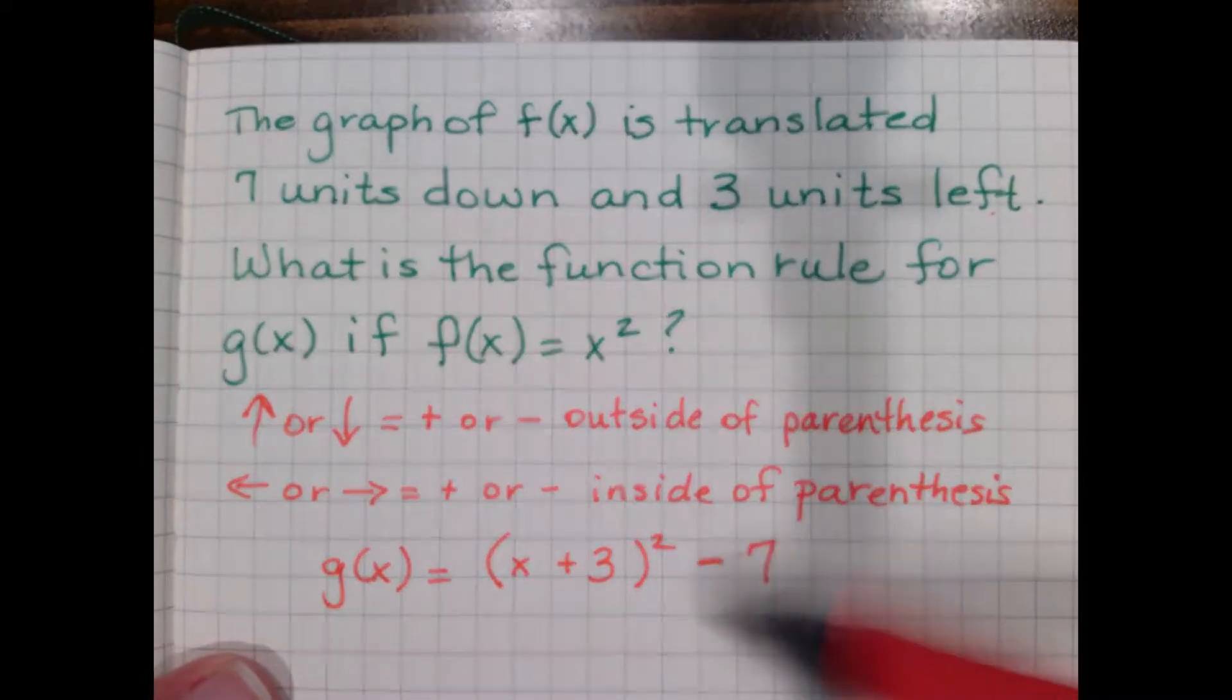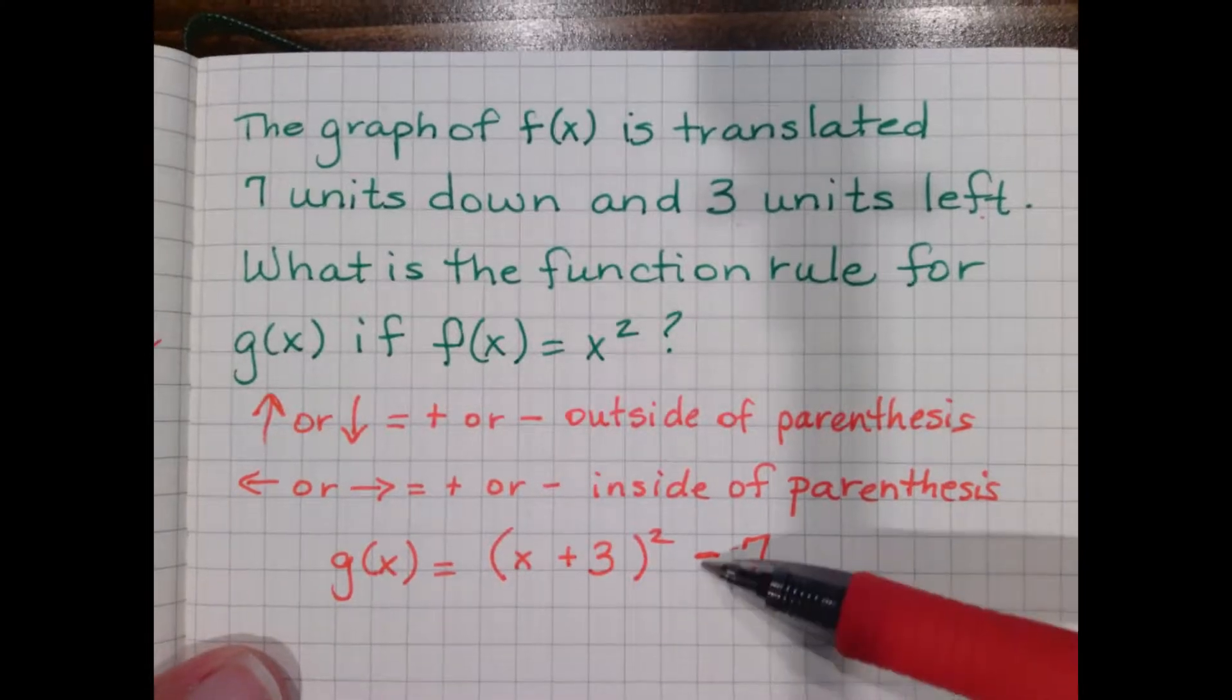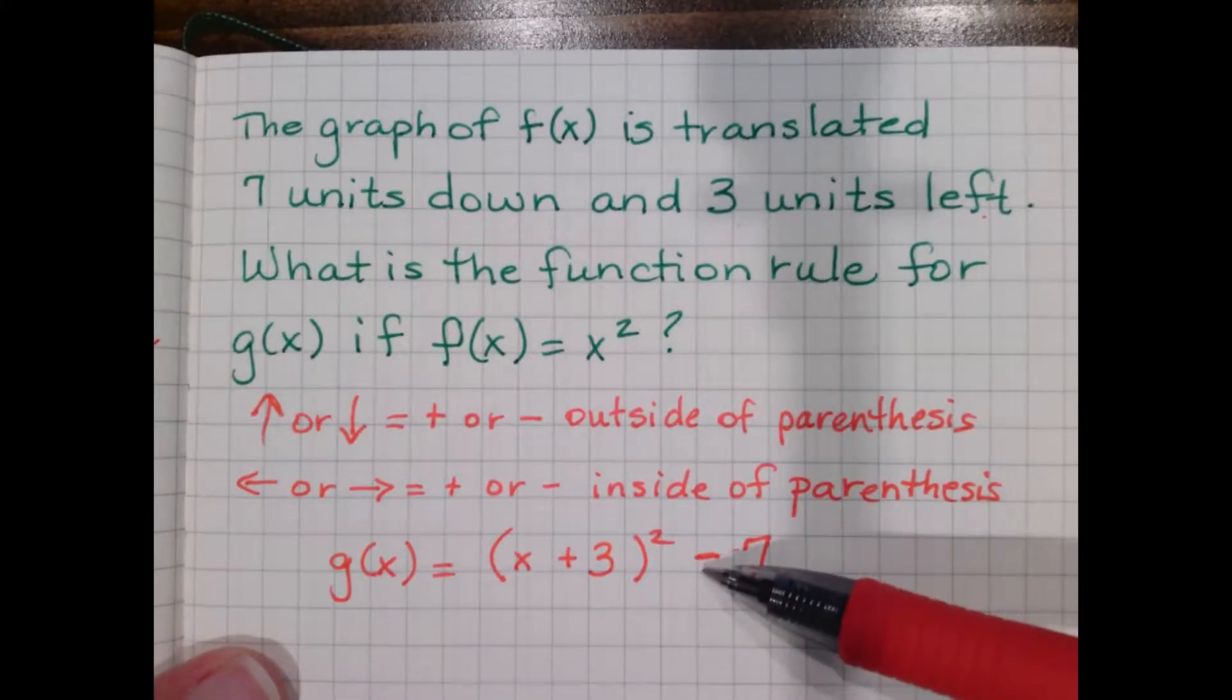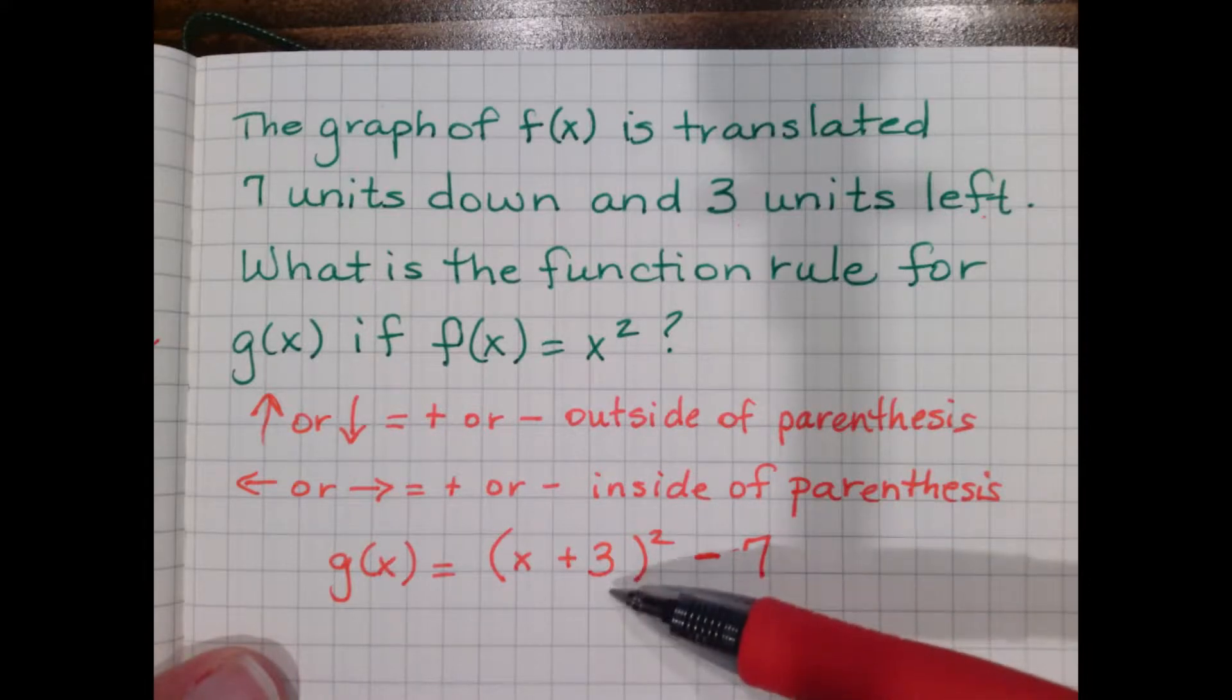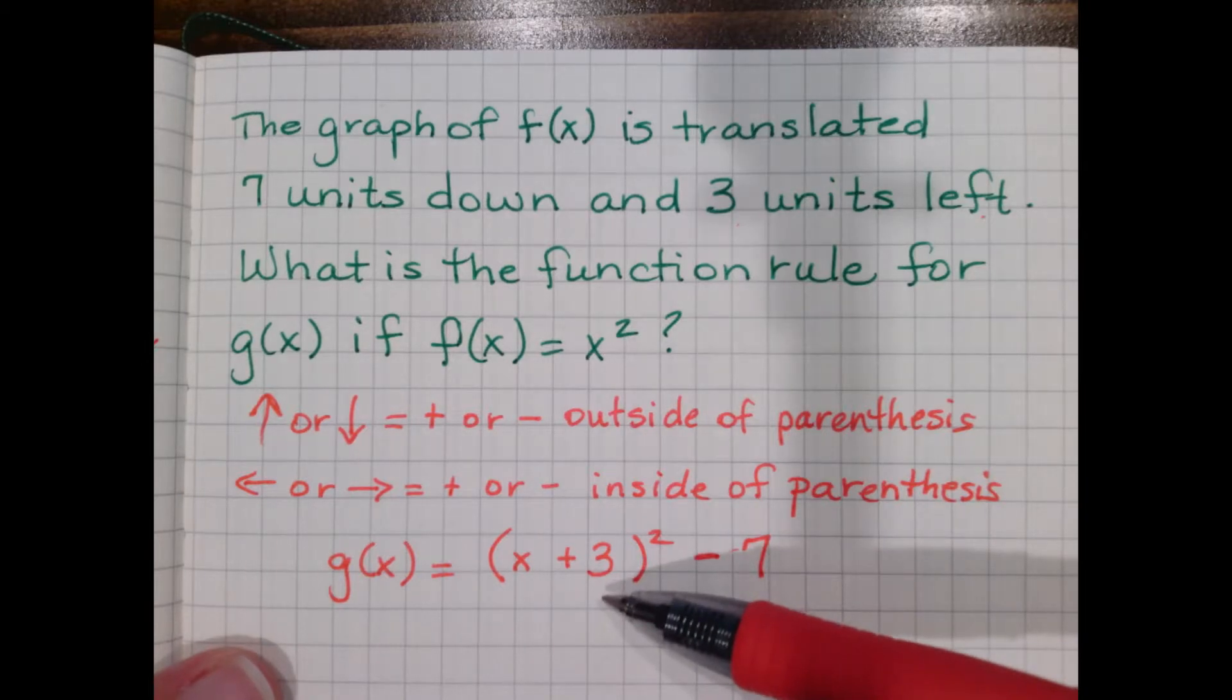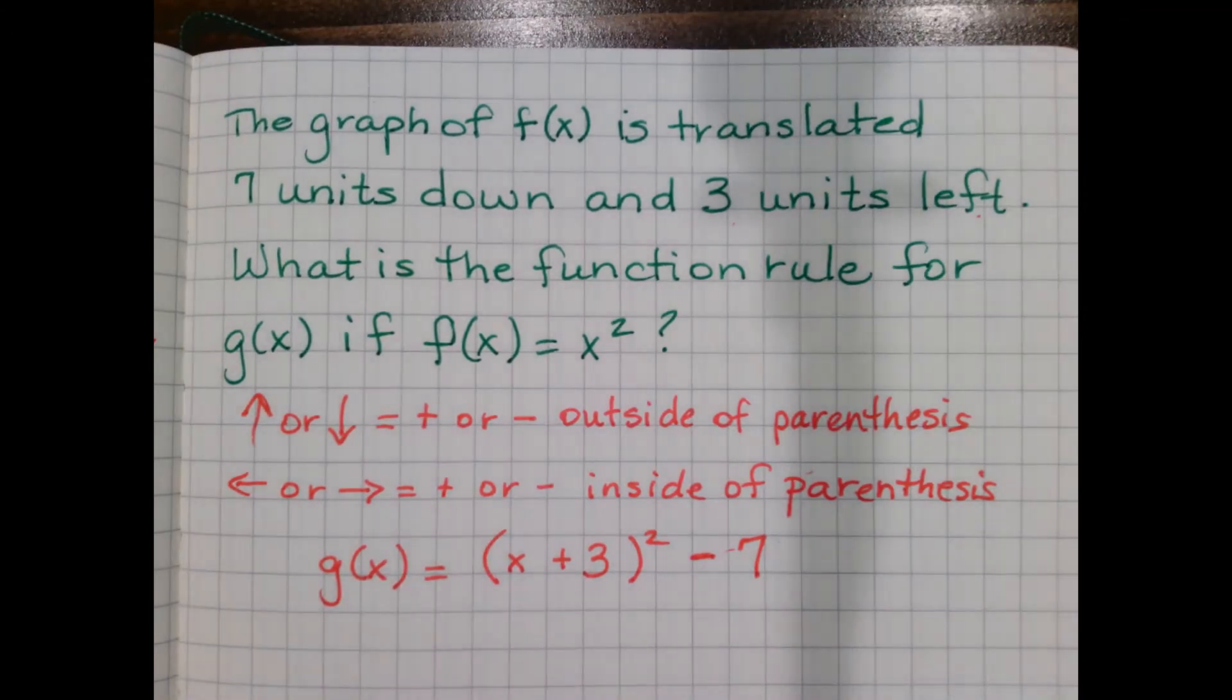So just to recap, up or down is outside of the parentheses, and the sign plus or minus is what you naturally think. Up means plus, down means minus. Left or right is shown inside the parentheses, and it's the opposite of what you think. You would think left meant minus, but we put plus here. Right, you normally would think would mean plus, but we do minus instead.